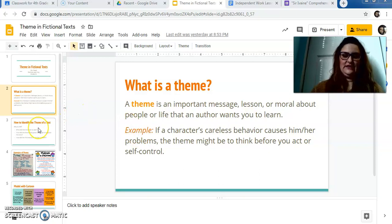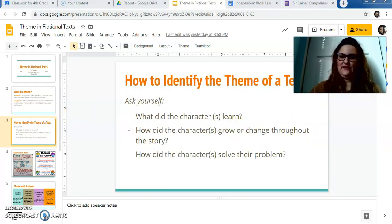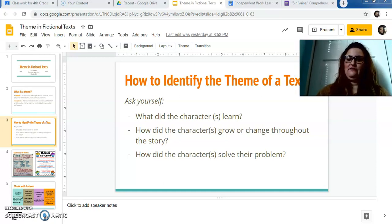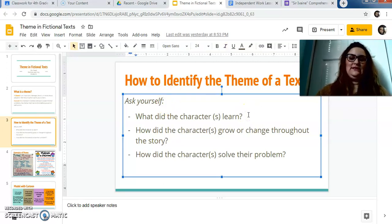So this is how we identify the theme of a text is what we think about. If you're in 4B, I often tell you the lesson learned lies between the problem and the solution in the story, which is true, but you can always ask yourself these questions. What did the characters learn? How did the characters grow or change throughout the story? So think about how they were at the beginning, how they are at the end and why are they that way? And how did the characters solve their problem? Again, what led to them solving their problem? What did they do? So these are the three important questions to ask ourselves as we read a fictional text to figure out the theme.